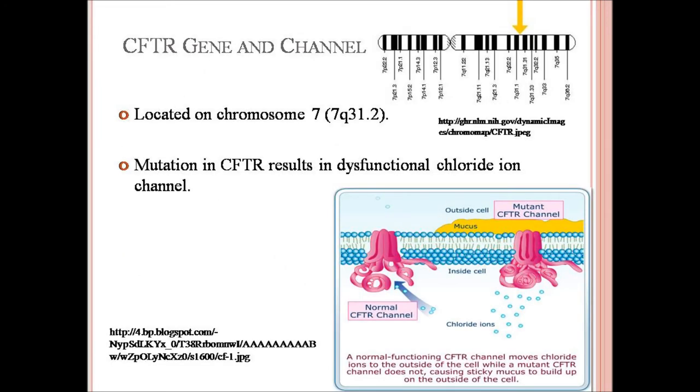The CFTR gene is located on the long arm of chromosome 7. As shown in the figure, a mutation in the CFTR gene results in a dysfunctional chloride ion channel.